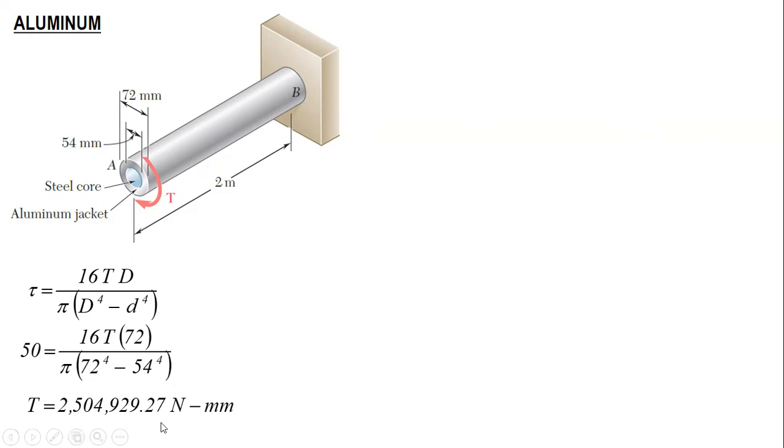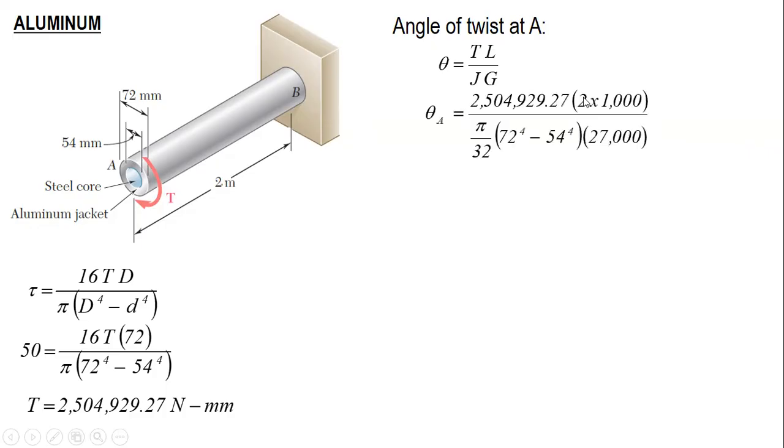Then use this value to solve for the angle of twist. For J, this is the polar moment of inertia for a hollow shaft. The angle of twist is 0.1029 radians, which converts to 5.8957 degrees.